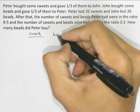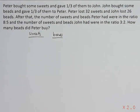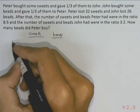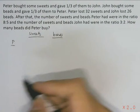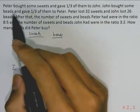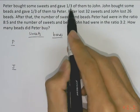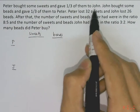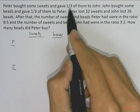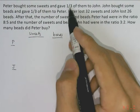Since Peter gave 1/3 of his sweets to John, we assume Peter bought 3 units at first. Out of 3 units, he would have given 1 unit to John, so he is left with 2 units himself.